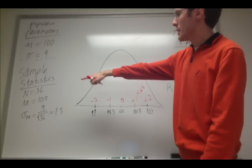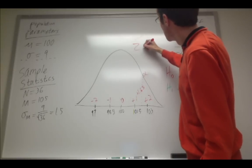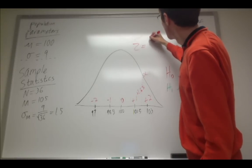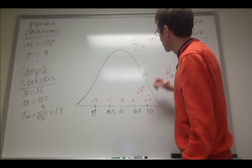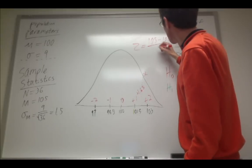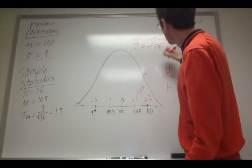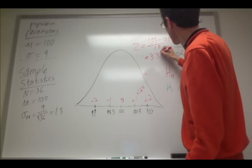So I have a mean for my sample of 105. So the z for this mean is going to be 105, minus the population mean, which is 100, and dividing by the standard error, which is 1.5. This corresponds to a z-score of about 3.33.